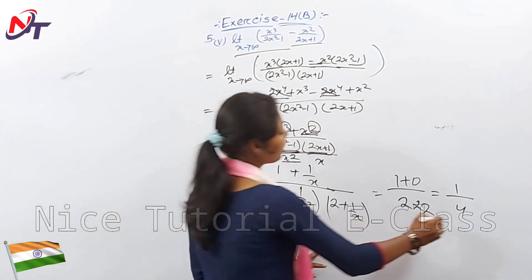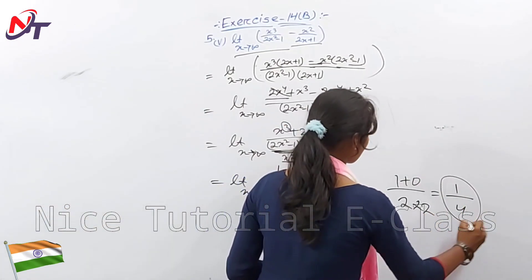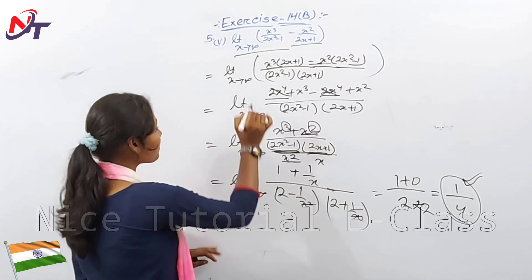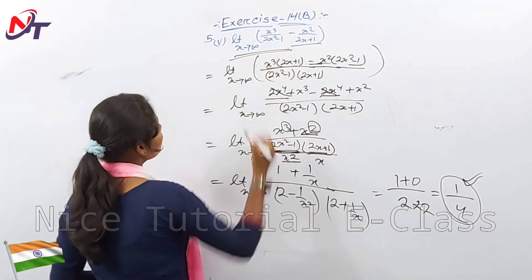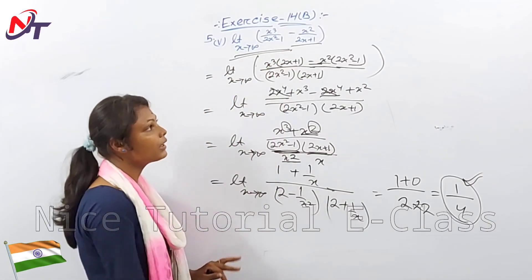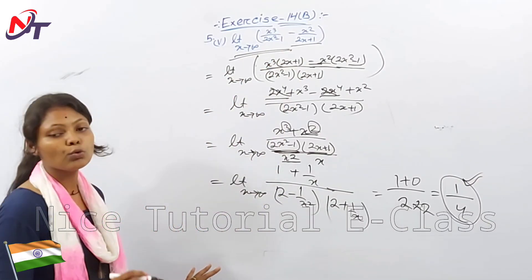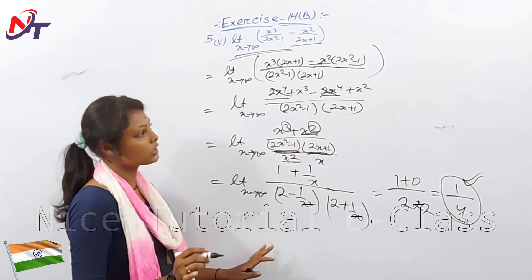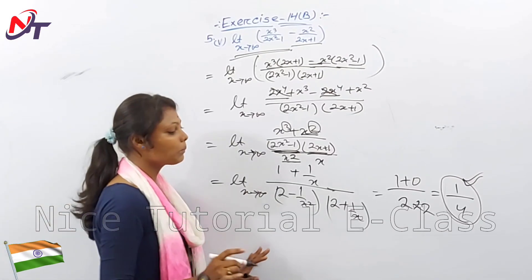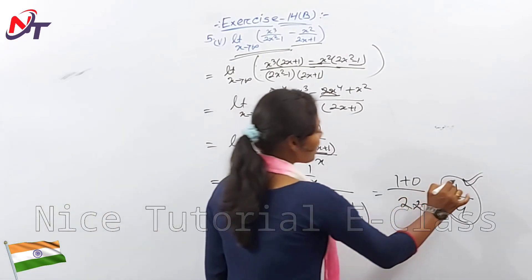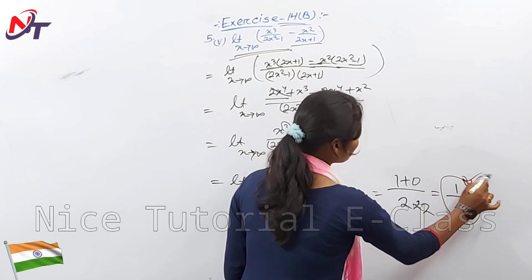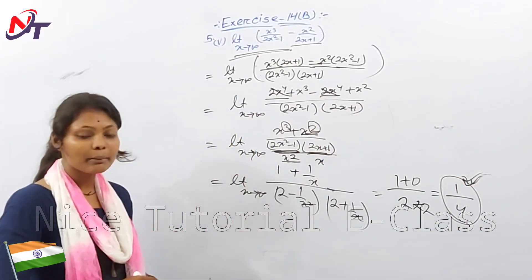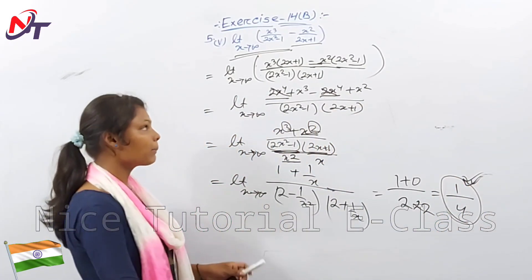So the value came out to 1/4. The limit x tends to infinity of x³/(2x² minus 1) minus x²/(2x plus 1) equals 1/4. That's question number 5.